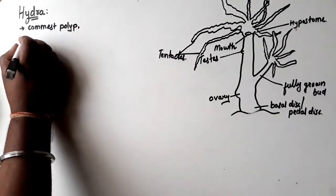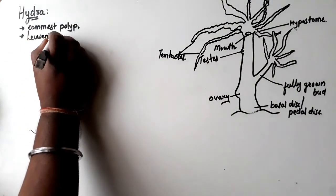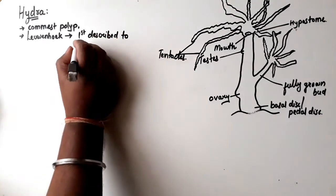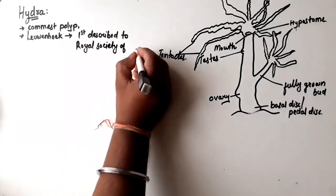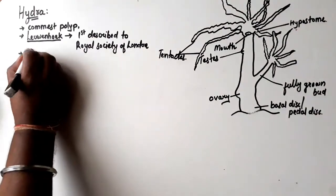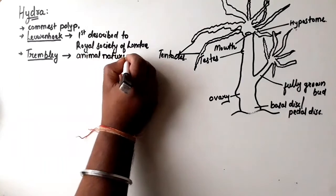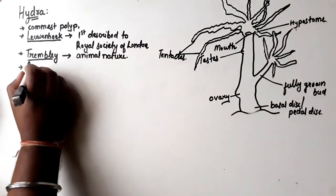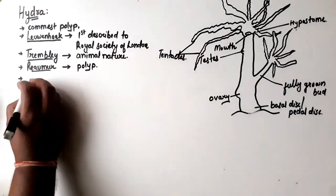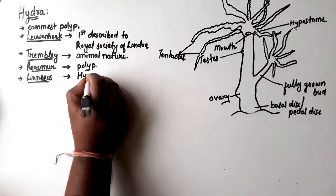Hydra is the most common polyp known to us. A polyp is an organism connected to a surface. Levenhook was the first person to observe and describe Hydra, presenting it to the Royal Society of London to illustrate fundamental characteristics of metazoa. But it was Trembley who identified the animal nature of Hydra. Reaumur had called it polyp, and the actual name Hydra...